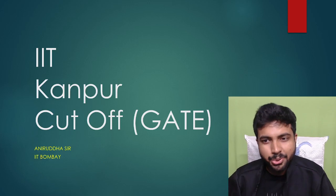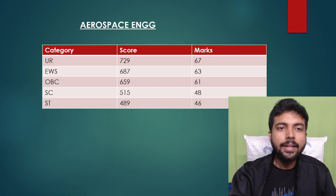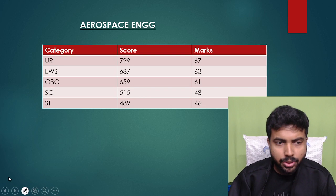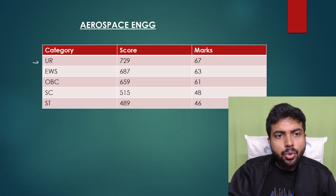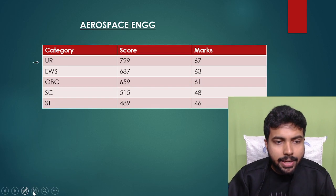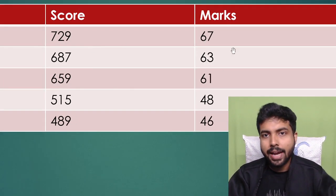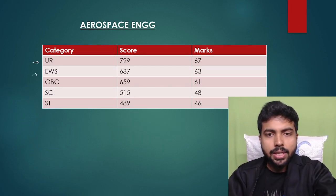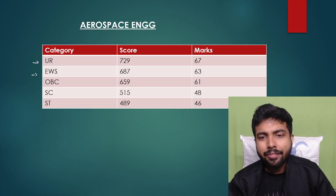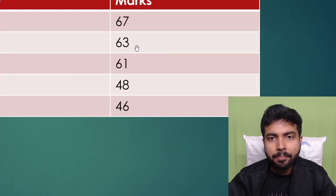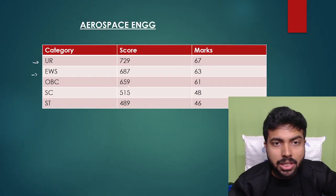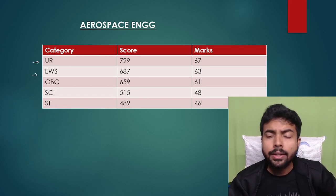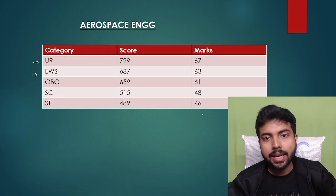Let's start with Aerospace Engineering. For the general category, the GATE score required is 729, which corresponds to around 67 marks. For EWS category, 687 score is required, which is around 63 marks. For OBC, 659 score and around 61 marks are needed. For SC category, there is a huge drop — only 515 score is required, corresponding to 48 marks.